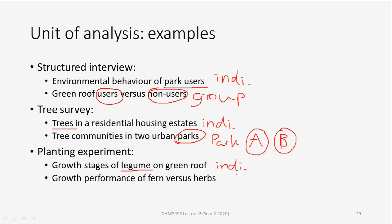You can also analyze their variance. However, if you want to compare the growth performance of two types of plants — let's say fern and herbs — these are two groups of different plants. It is possible to measure their growth performance, and then we can take the average of their growth height or their growth vigor and compare them. So this is group 1, fern, and group 2, herbs. We use group to represent different vegetation types.